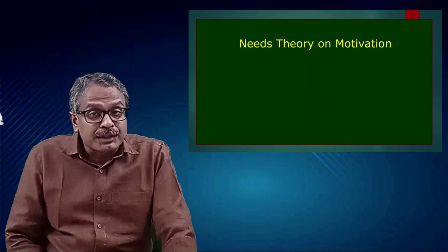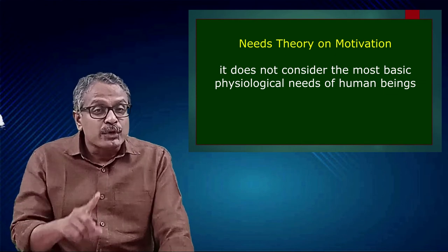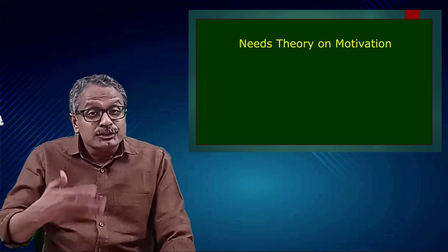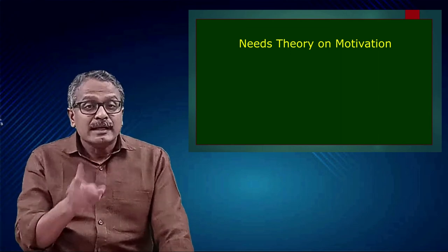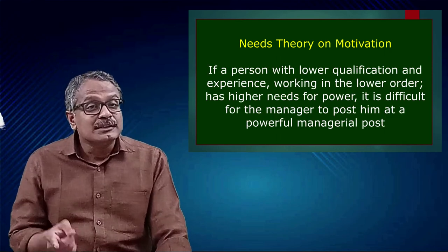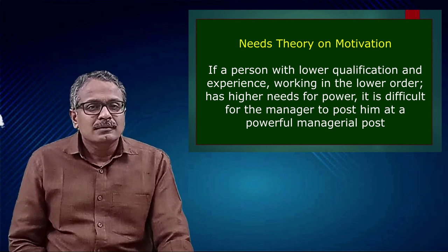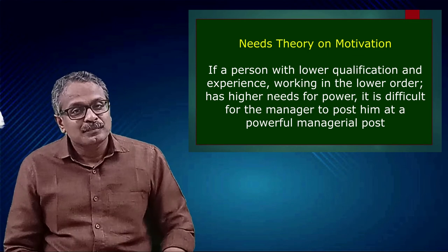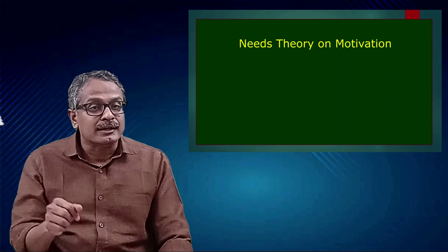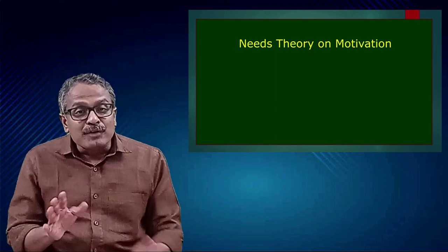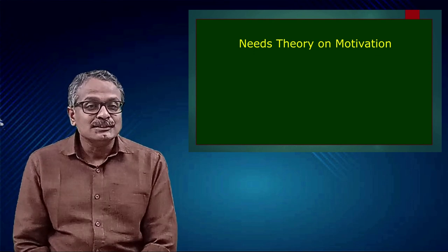When we consider the disadvantages of the theory, the first is that it does not consider the most basic physiological needs of human beings — the innate needs of the human body are not given relevance. The theory talks about social needs only. Another practical problem is the allocation of jobs. If a person with lower qualification and experience has higher needs for power, it is difficult for the manager to post them at a powerful managerial position — a lesser qualified, lower-level employee cannot simply be assigned powerful responsibilities because of their higher need for power. That concludes our discussion of McClelland's three needs theory.